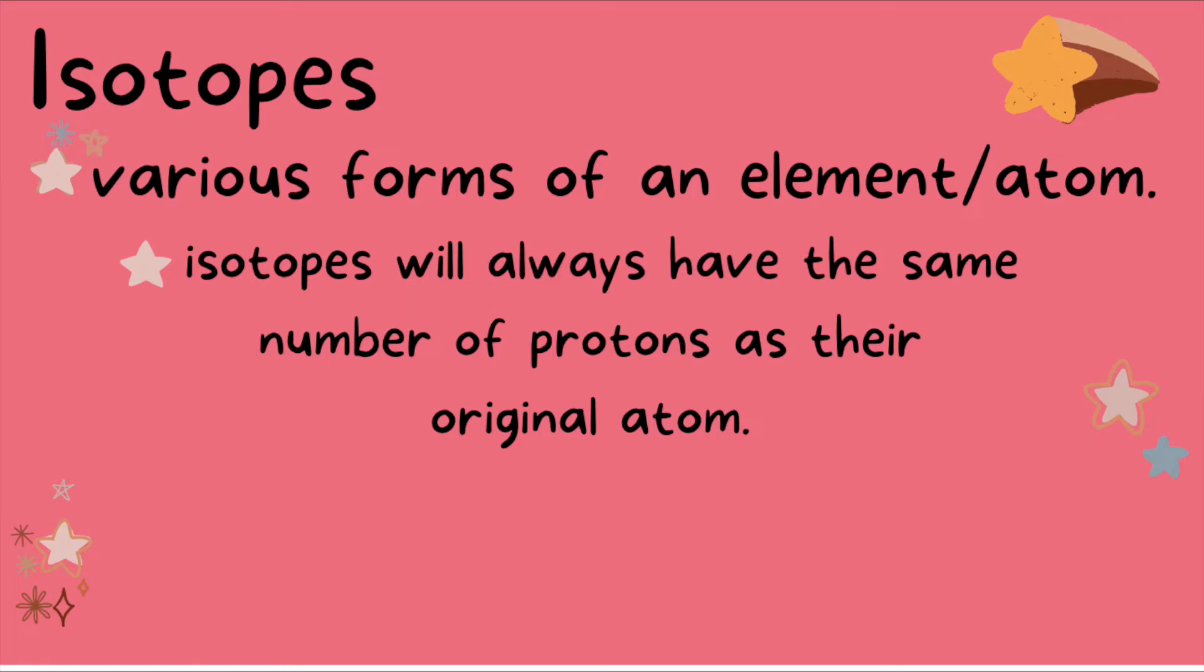We know that the number of protons is the signature of each atom. Each atom will have different number of protons. So carbon will always have six protons, oxygen will always have eight protons, hydrogen will always have one proton, and so on. So all isotopes of the same atom will always have the same number of protons.